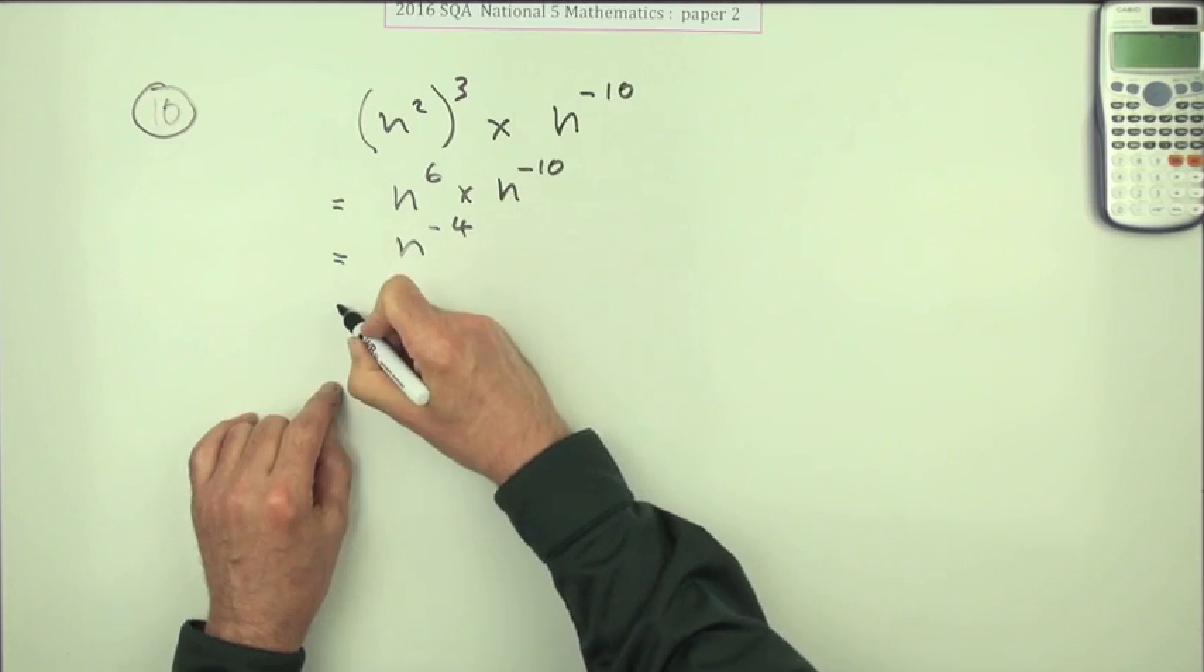And that's where it comes in with show your answer with a positive power, because that's a negative power. So you use up that negative. That negative means you've got the reciprocal, so it's 1 over n to the power 4.